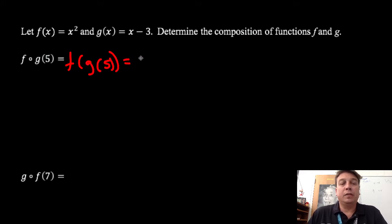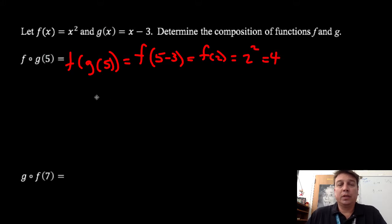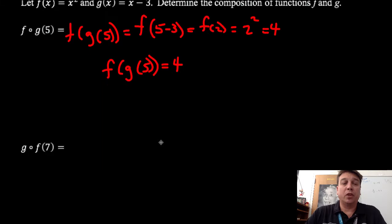So I need g of 5. I take f of 5 minus 3, because I'm just taking the information and putting it right in there. So that means I need f of 2. I substitute 2 into function f, and I get 2 squared, which is 4. So f of g of 5 equals 4. I'm literally just substituting one function into another.